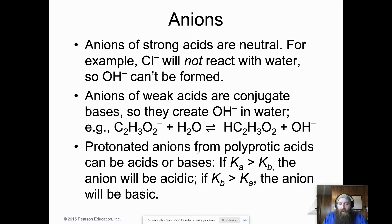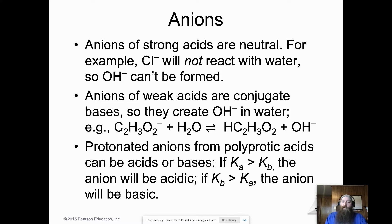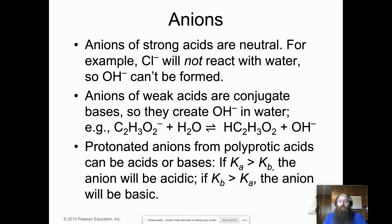If we have a protonated anion from a polyprotic acid, it can act as either an acid or base. We compare Ka and Kb: if Ka > Kb, the anion behaves as an acid; if Kb > Ka, it behaves as a base.